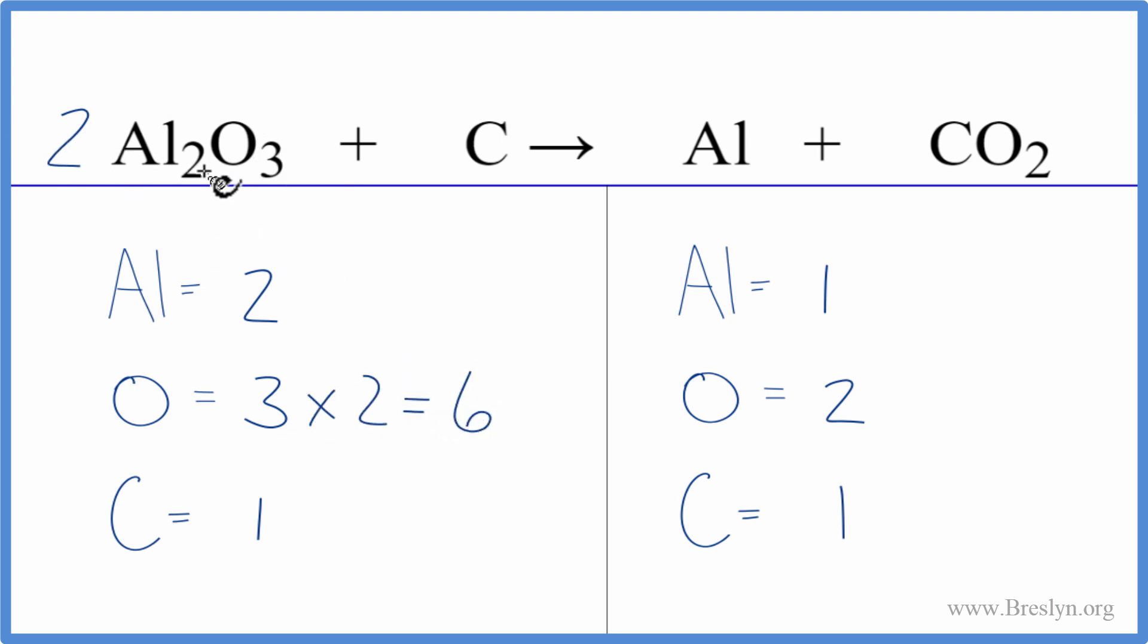And this two, it applies to everything. So two times two, that'll give me four aluminums. But that's good because I have six here and two here. So if I put a three in front of the CO2, now I'll have two times three. That'll give me six.